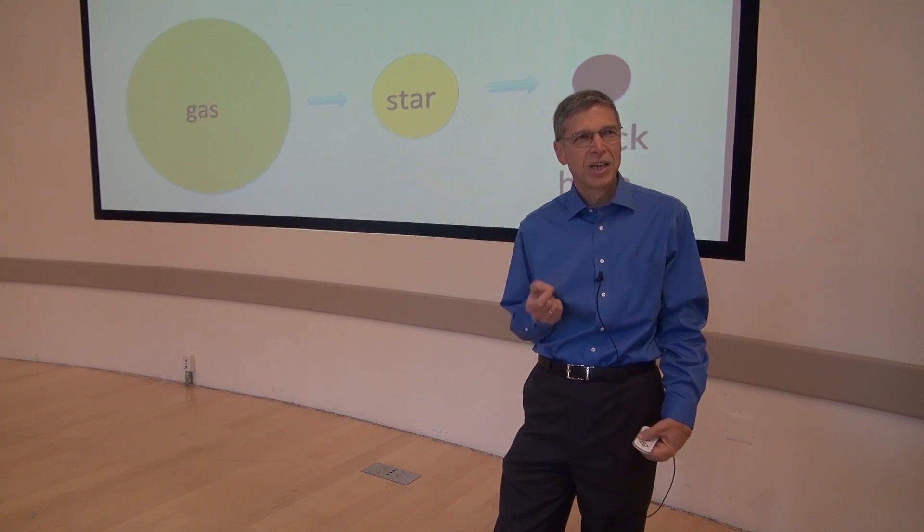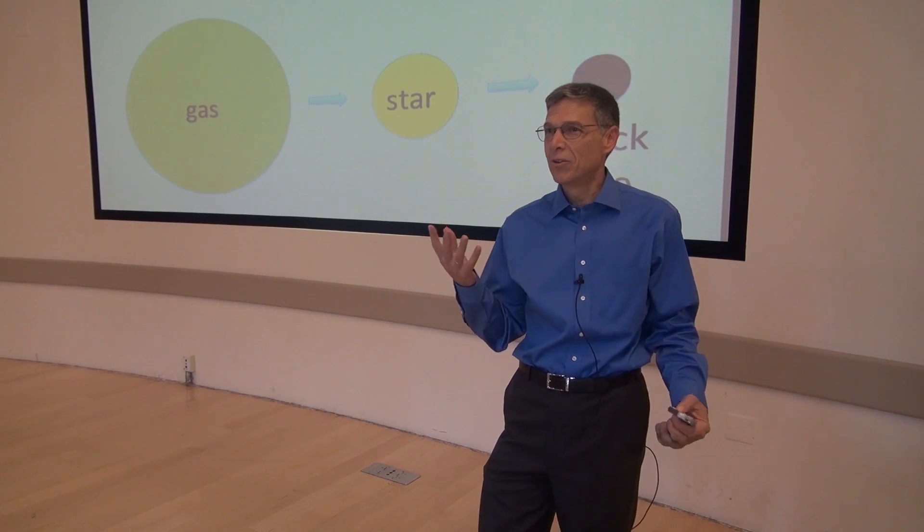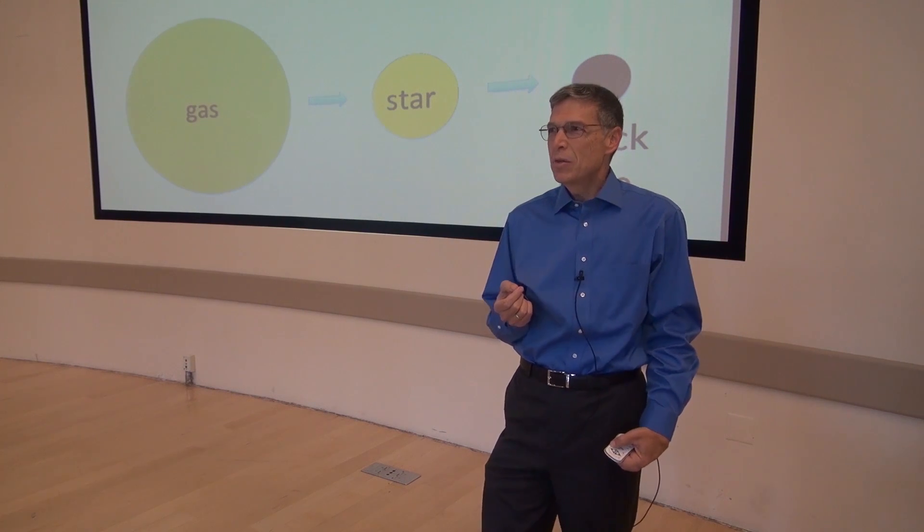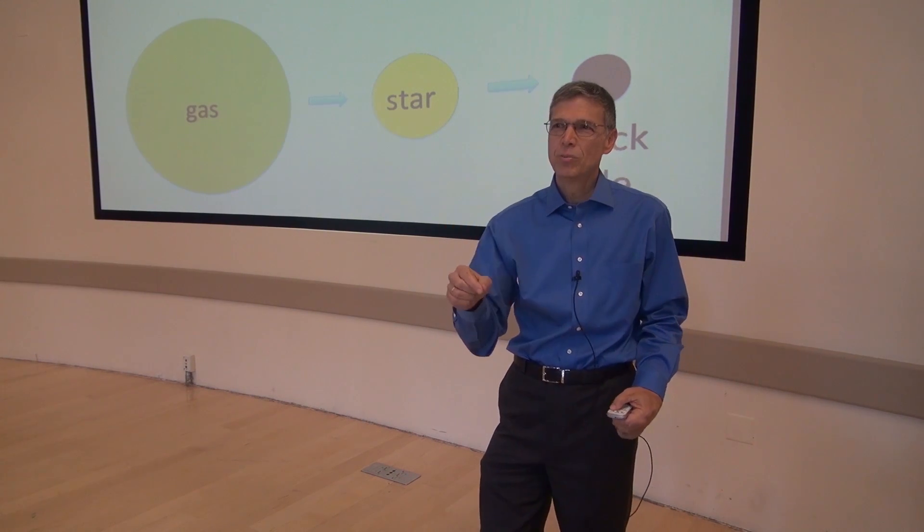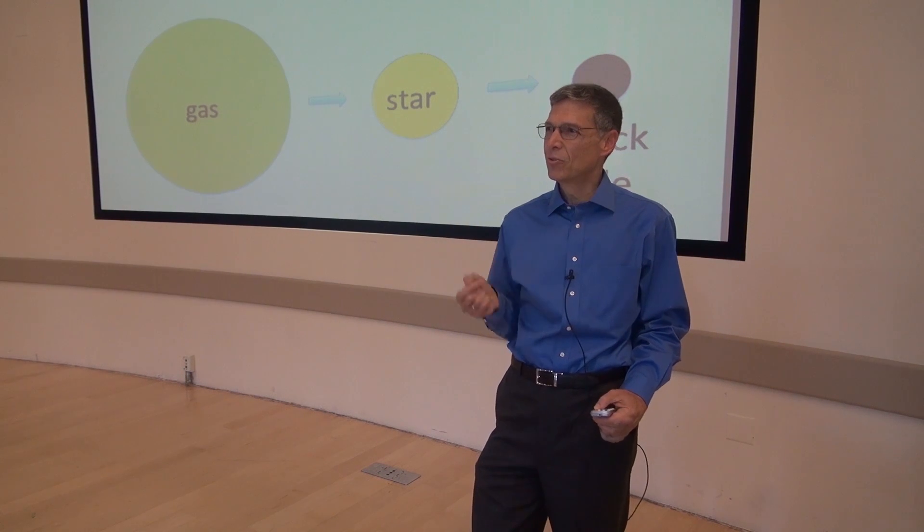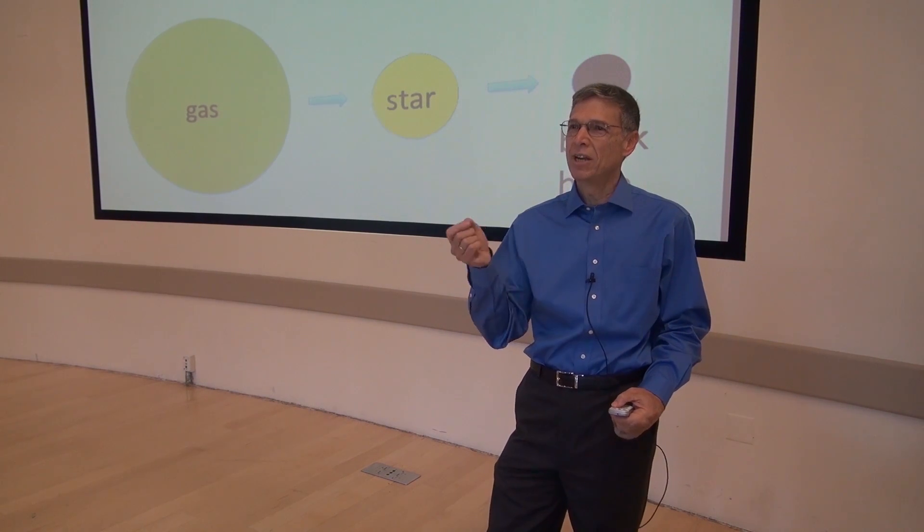You might wonder how we detect black holes, since they're black and don't emit any light. But the point is that when matter falls onto a black hole, it gains a lot of energy and starts to radiate. And we can see that radiation.